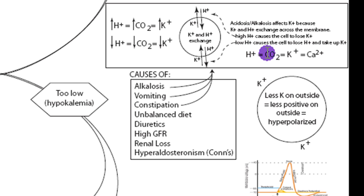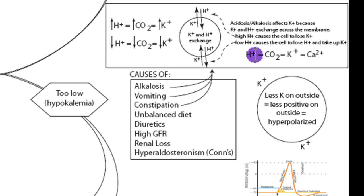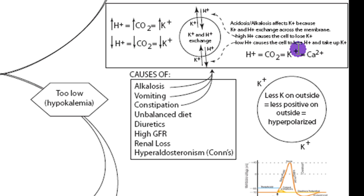Hydrogen, CO2, potassium, and calcium are all interrelated — essentially, if one goes up, all of them go up. The hydrogen-calcium connection involves albumin, a protein in the blood that provides osmotic pressure. Albumin has large negative charges balanced by positive ions — either calcium or hydrogen. If there's more hydrogen, it binds to albumin and kicks calcium up. If there's low hydrogen, calcium binds albumin instead, lowering free calcium. So an increase in acid causes an increase in CO2, potassium, and calcium, or all four go down together.